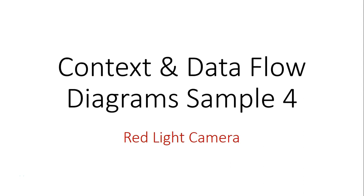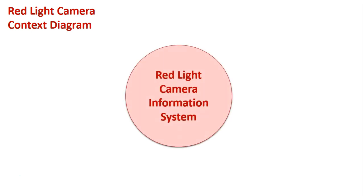Context and data flow diagram sample for red light camera. With these diagrams, we're going to look at the processes that occur from when a car crosses the sensors on a road at an intersection where there is a red light camera. The first part of this context diagram is the information system itself, which is a single process — we're going to call that the red light camera information system.